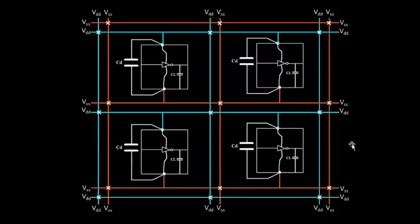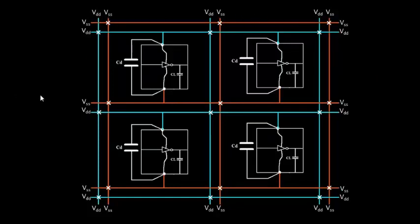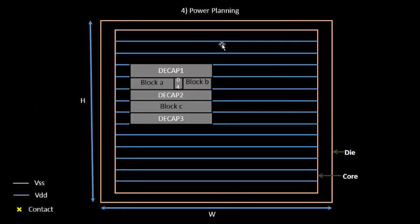Similarly, a line going from one point to another will take its current from the nearest power supply. Even a 16-bit bus will take its charge from the nearest power supply or dump its charge into the nearest ground line. This structure is called a mesh, and this is exactly the solution for our power planning.